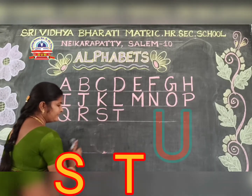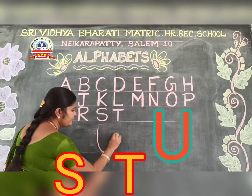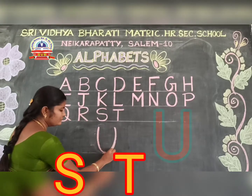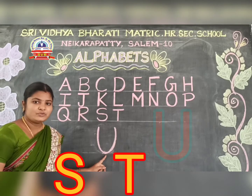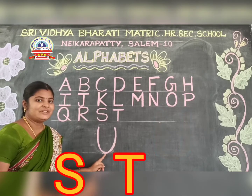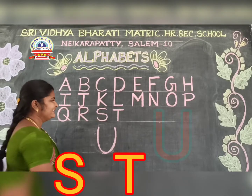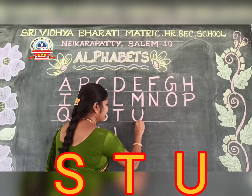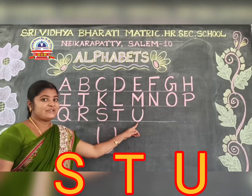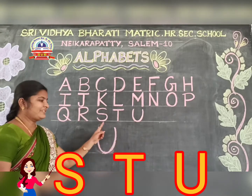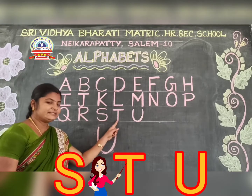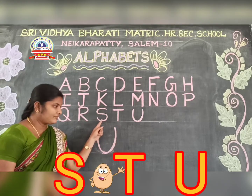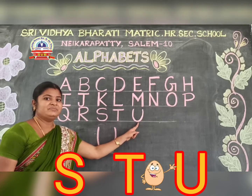The next letter is U. U. This is U. Say loudly. Say with me. U. Very good. Now I am writing here. Say loudly. Say again: S, T, U. Say again. S, T, U. Very good.